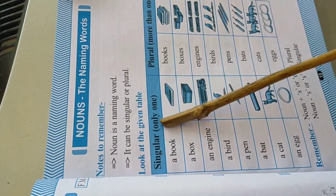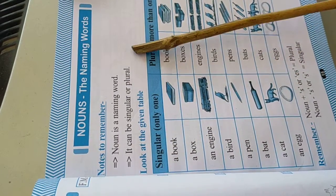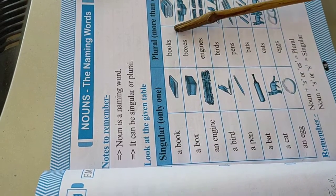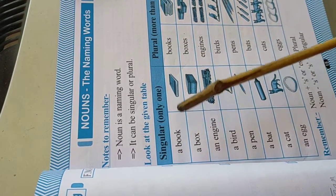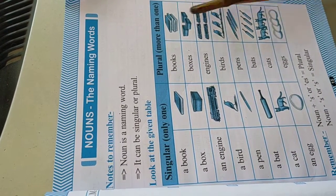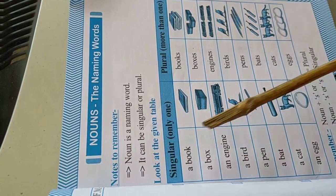A noun is a naming word and it can be singular or plural. It is written as a book, books - that means singular number and plural number. Singular is only one, plural is more than one. These are the nouns, the naming words.